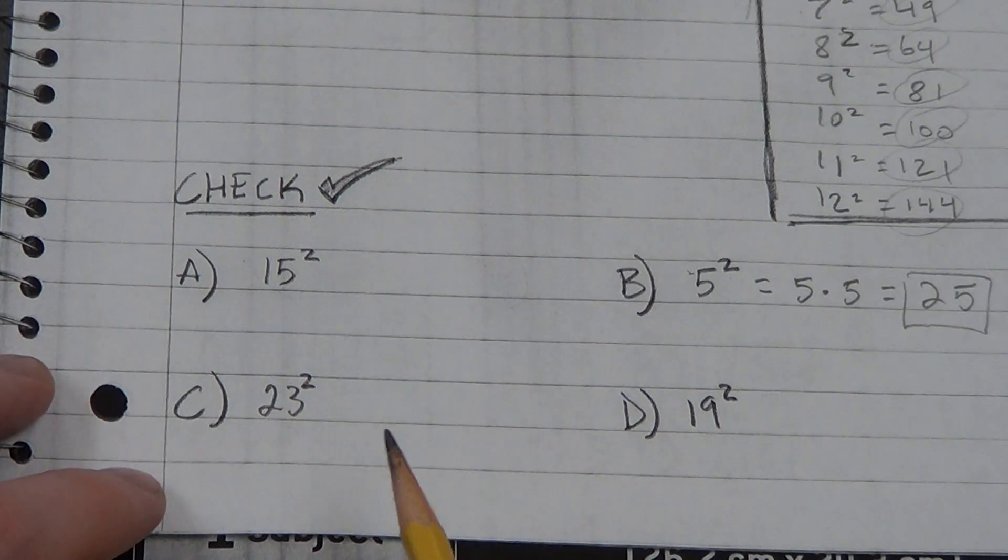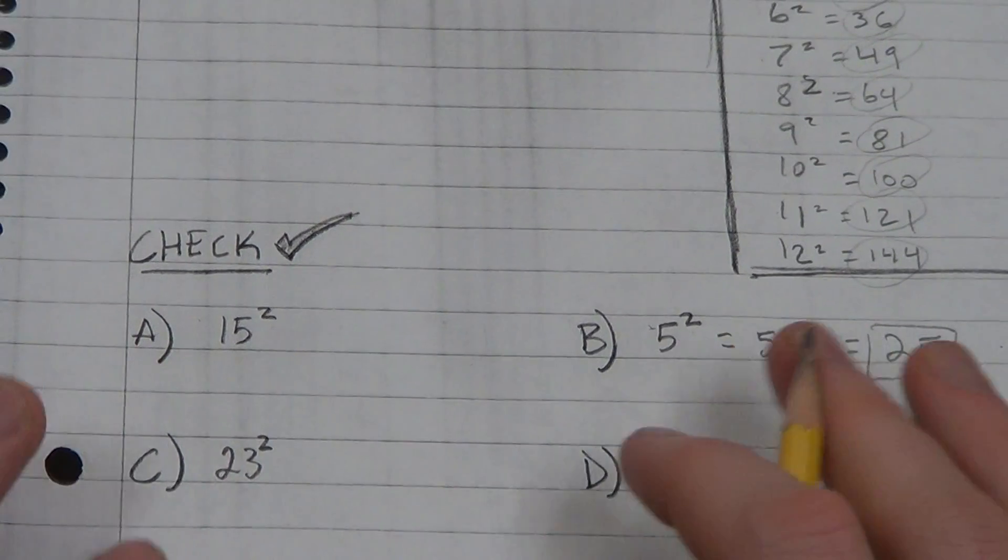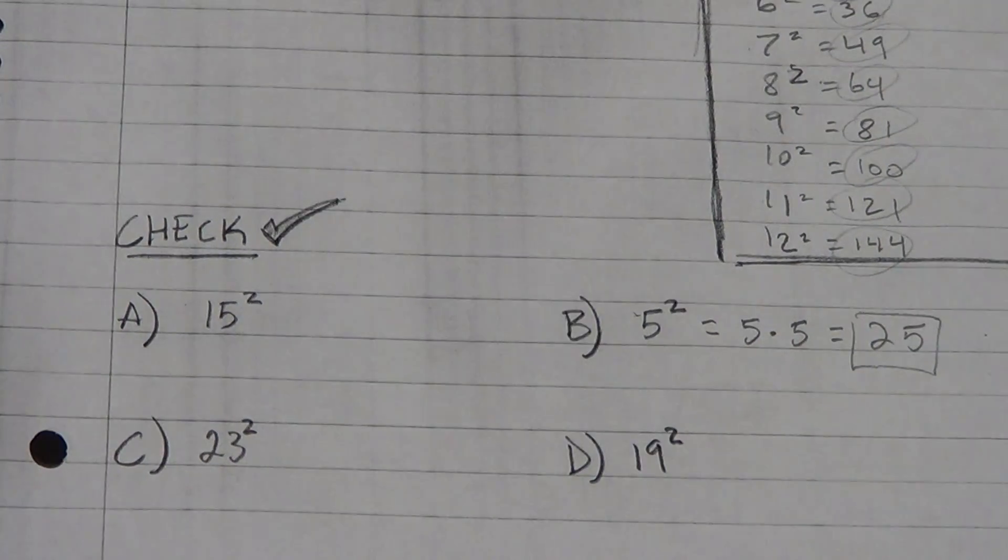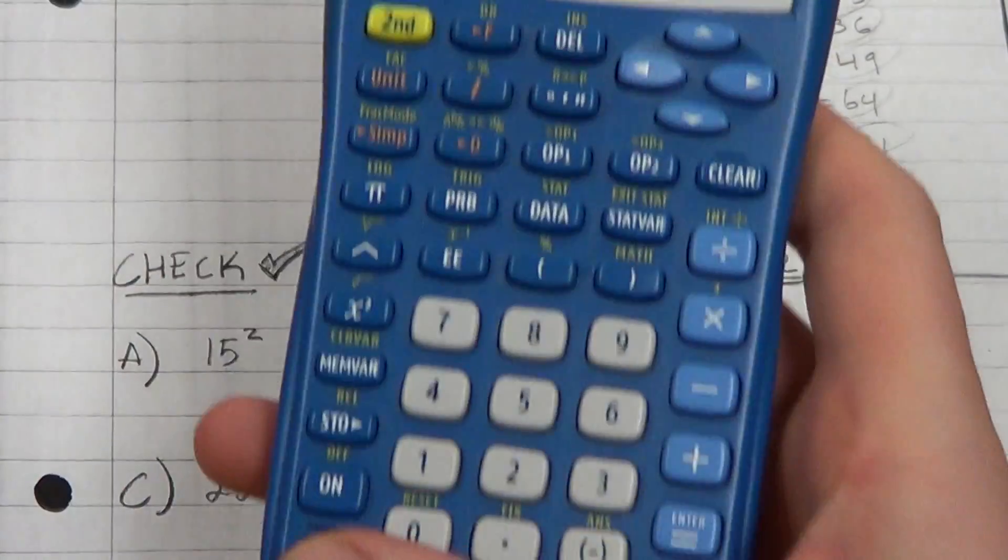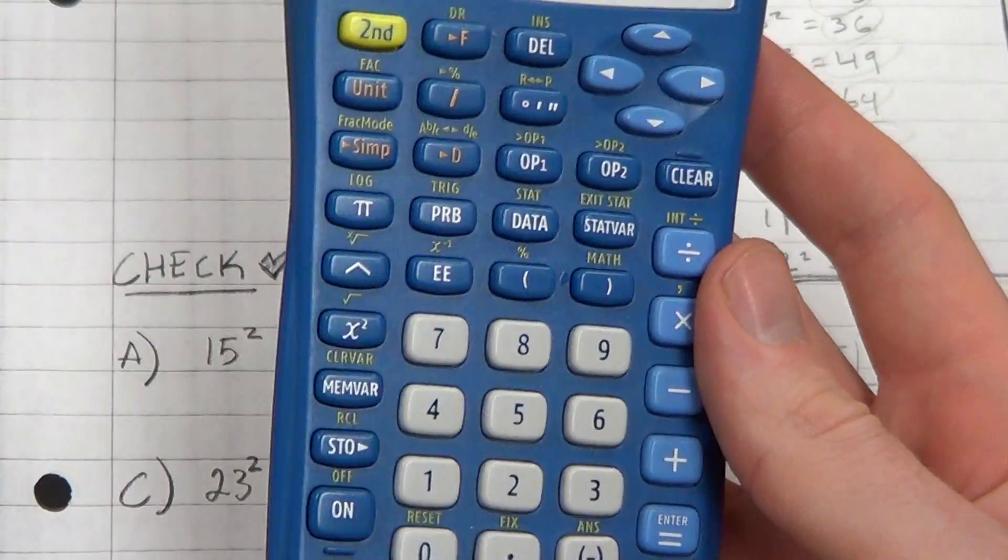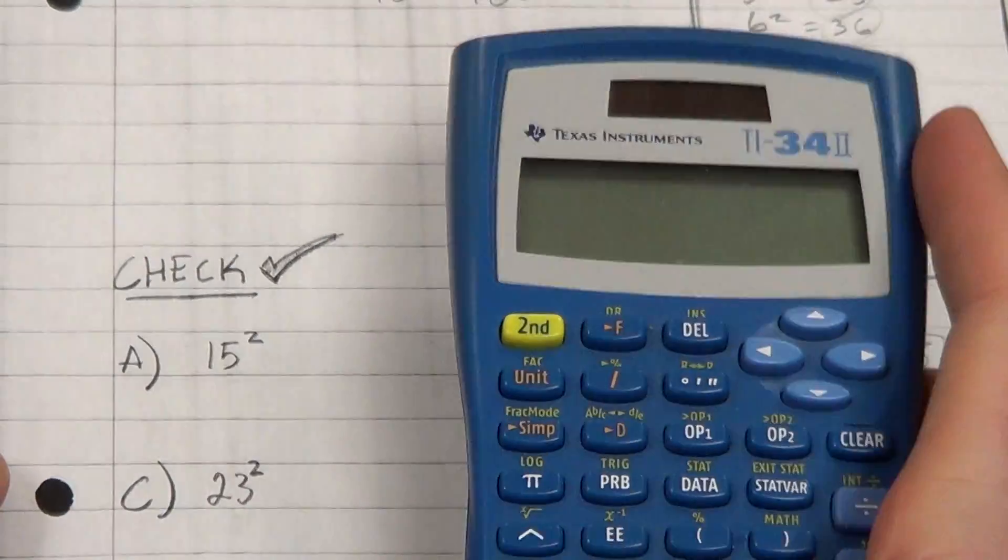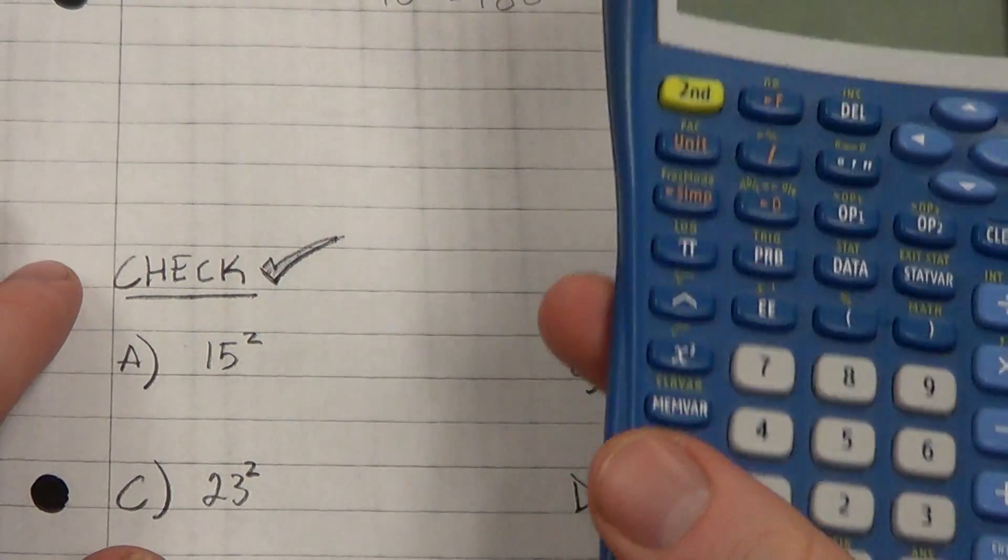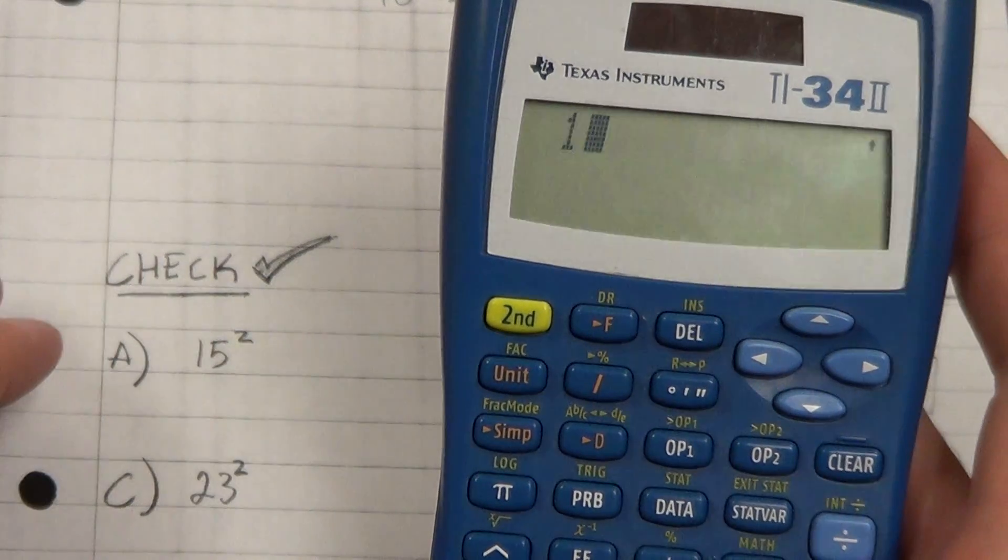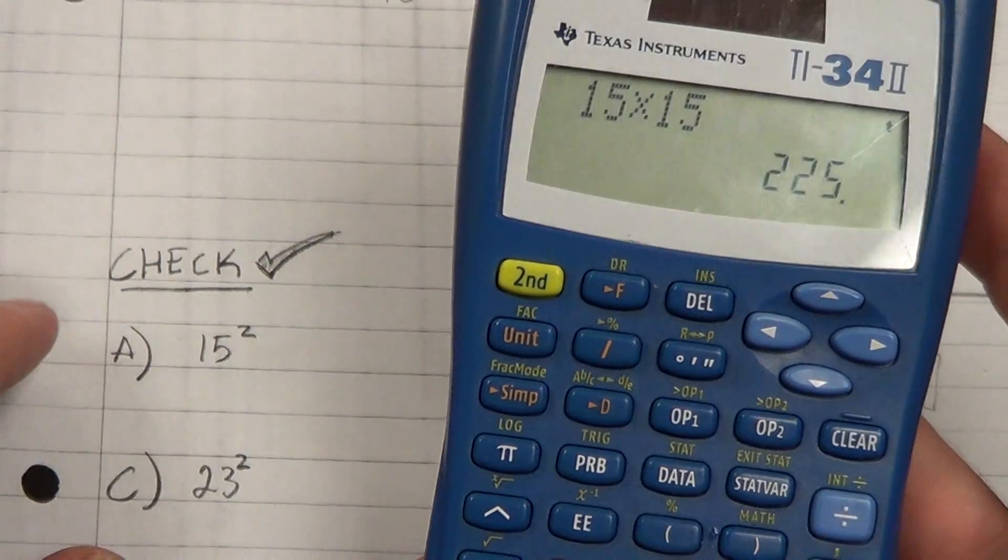Now you won't always know, so 15 squared I might not know, and 23 squared I might not know, and 19 squared I might not know. So, you need to be able to do them on a calculator. So we're going to show you two different ways to do them on a calculator. First let's look at this, this is a TI-34-2, it's a scientific calculator.